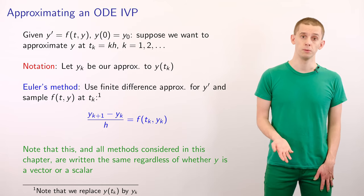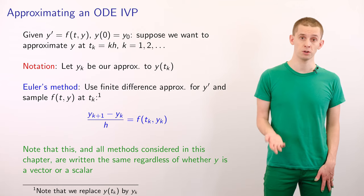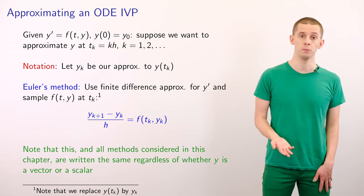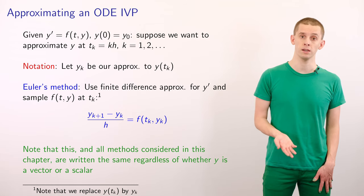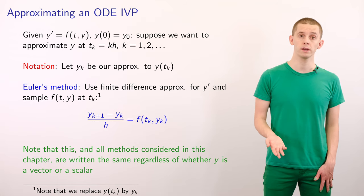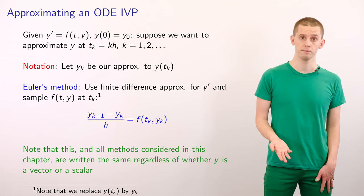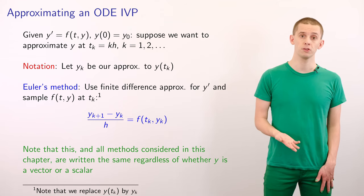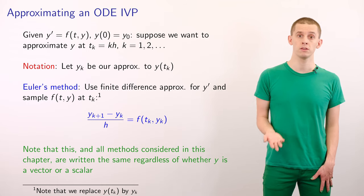And we'll write yk to be our approximation to the true solution y evaluated at tk. A simple approach to solve this problem is to use Euler's method, and here we'll approximate the y prime in our ODE using a finite difference approximation. Note that throughout this section, all of the equations that we're going to write down work the same regardless of whether y is a scalar or a vector. Therefore, all of the methods that we use can be generalized to the vector case.